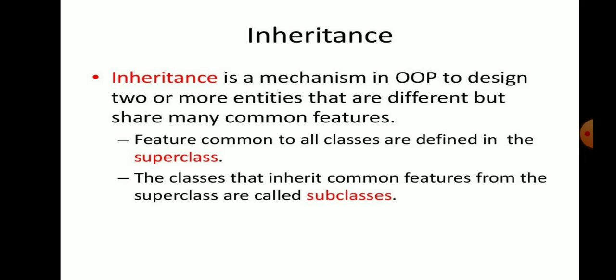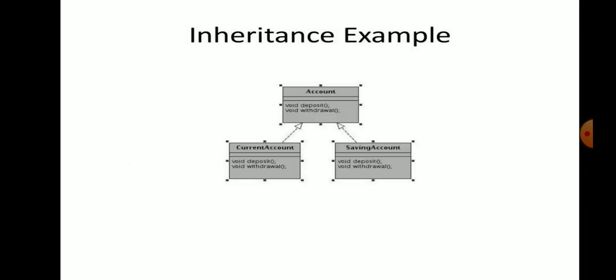In single-level inheritance, a derived class inherits from only one class. In multi-level inheritance, classes are derived from another derived class. In multiple inheritance, a new class inherits attributes from two or more classes. Hybrid inheritance is a combination of more than one type of inheritance. Hierarchical inheritance is the process of deriving more than one class from a base class. For example, the base class is Account, and subclasses are Current Account and Saving Account, which inherit elements from the Account base class.